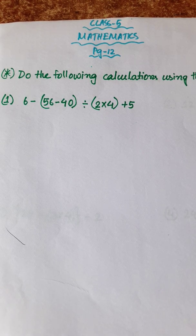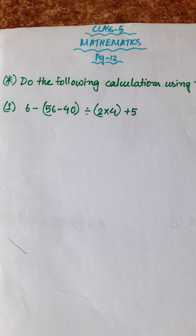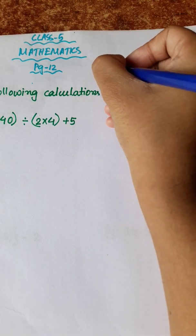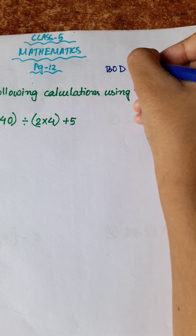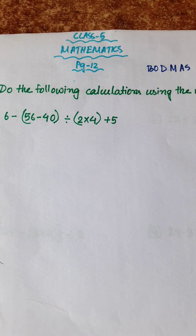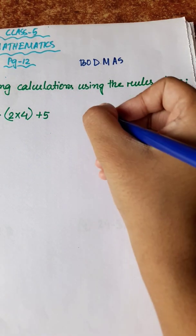We have a simplification of math. Now we have a question: do the following calculations using the rules above. This math is called rules — we have a board math rule. We have a class 4 active video; I will link to this video in the description box. So we have a board math rule to follow.